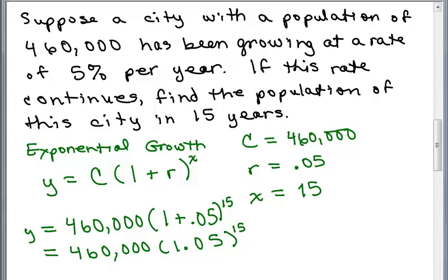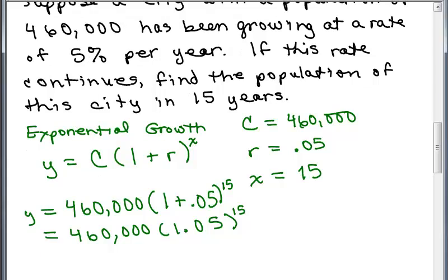So I have a Texas Instruments TI-30X2S, and I just plug it in exactly as it's shown. And then I'm going to approximate it. I'm just going to round up to the nearest number of people in population and I get 956,307. So it's approximately that many people. It was really 6.9, et cetera.